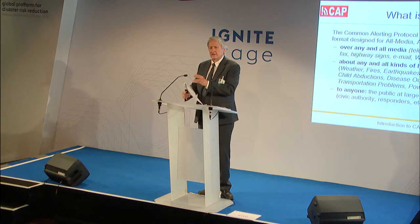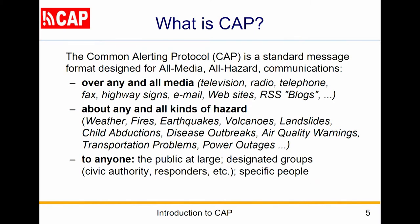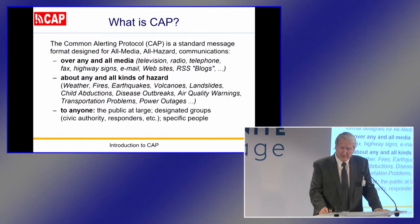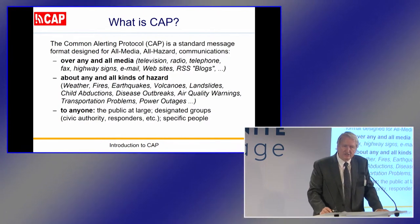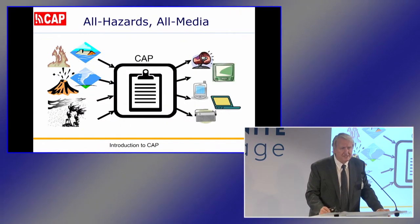Before CAP, emergency messages were plain, unstructured text — a press release or a bulletin. CAP gave us a structured message containing a mixture of data and text. The CAP message communicates the key facts about any kind of emergency: What is the emergency? Where is the affected area? How soon do we need to act? How bad will it be? How certain are the experts? CAP is designed for any media to communicate information about any kind of hazard situation. We could say CAP is a standard business form for the business of emergency alerting.